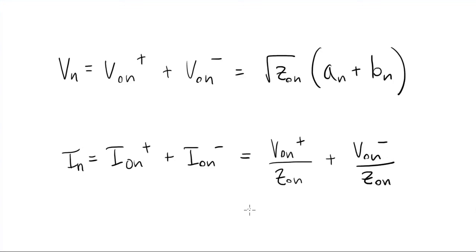As you might expect, it's the voltage over the characteristic impedance, and we can also write it in terms of the A's and B's.